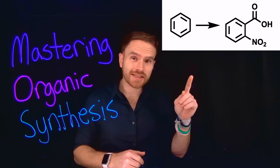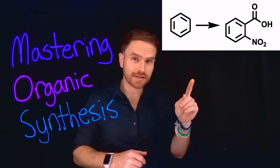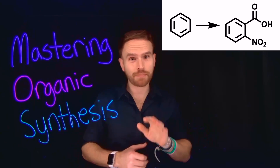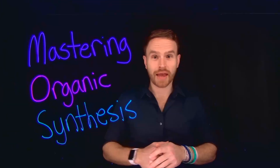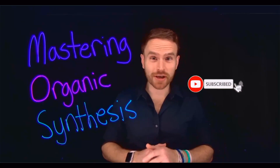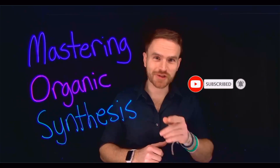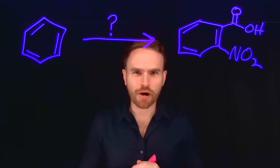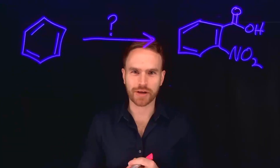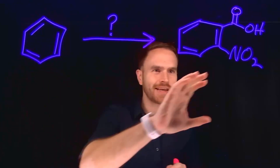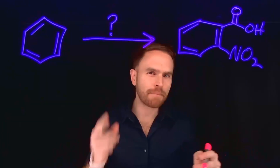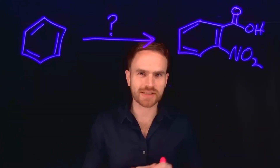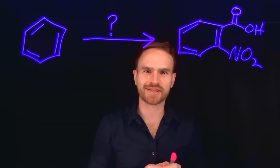In last week's video, I asked if you could figure out the multi-step synthesis for this chemical transformation. So if you haven't had a chance, pause the video now and try it independently. This is a classic example of a synthesis problem you might find in an organic chemistry class, where you have to turn benzene into some derivatized version, but you need to consider several different types of reaction pathways that may inhibit the ability to synthesize this molecule.